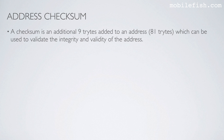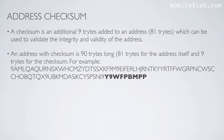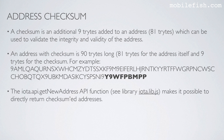A checksum is an additional 9 trites added to an address which is 81 trites long, and can be used to validate the integrity and validity of the address. An address with checksum is 90 trites long: 81 trites for the address itself and 9 trites for the checksum. The iota.api.getNewAddress API function makes it possible to directly return checksummed addresses.